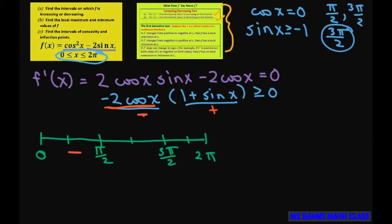For the interval between pi over 2 and 3 pi over 2, let's plug in pi. This is going to be positive and positive, so this is going to be positive. And then we can plug in a value between 3 pi over 2 and 2 pi — let's plug in 7 pi over 4 — and we're going to get negative and positive, so that gives you a negative.